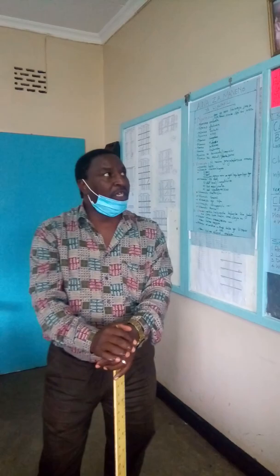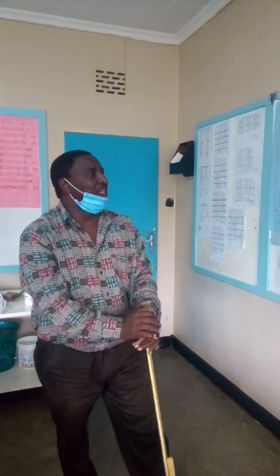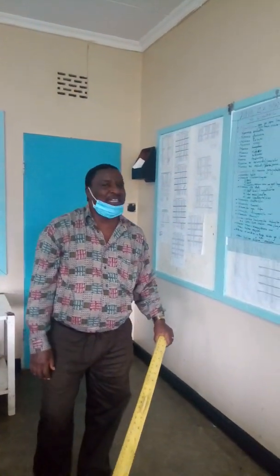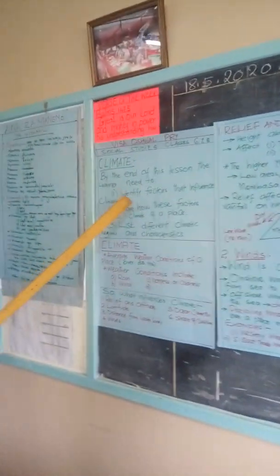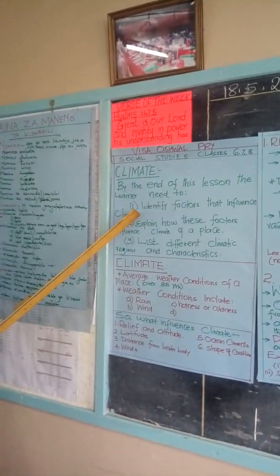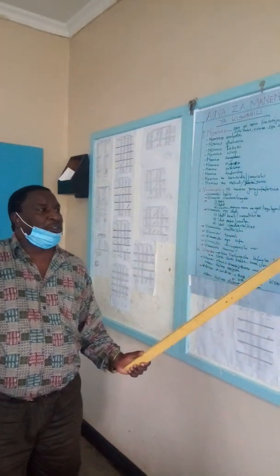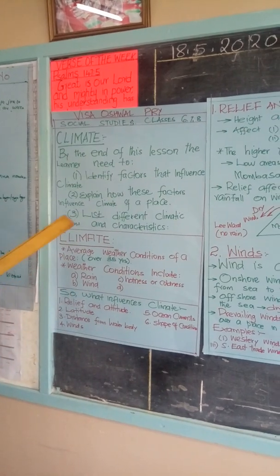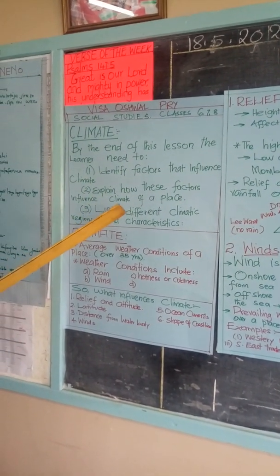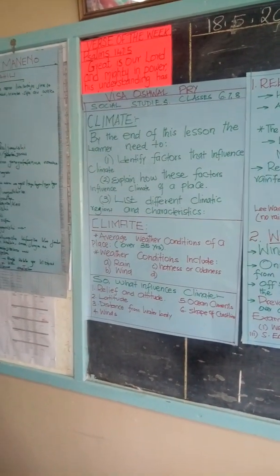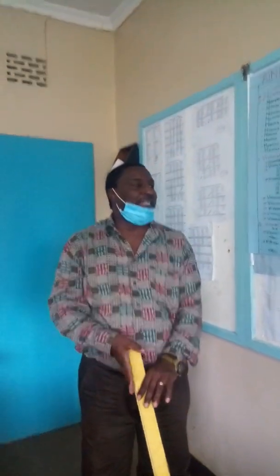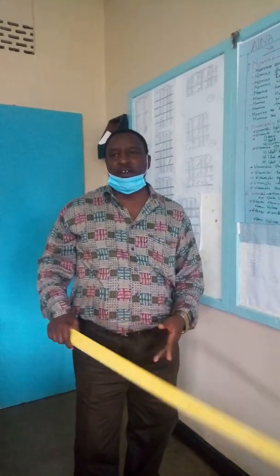This afternoon we will be looking at social studies, and in particular, climate. Our topic today is climate. Our objectives are: number one, to identify factors that influence climate over a place; to explain how these factors influence climate over place and time; and to list different climatic regions and their characteristics. Climate is the average weather conditions of a place.